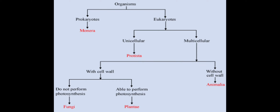Prokaryotic organisms include kingdom Monera — all the different organisms which come under Monera, covered in your 8th standard. Eukaryotic organisms, on the other hand, are broken down into two parts: unicellular organisms and multicellular organisms. Under unicellular organisms you have kingdom Protista, also covered in your 8th standard.